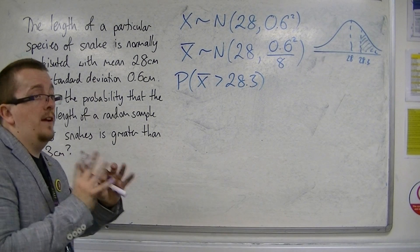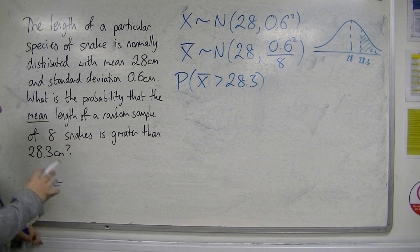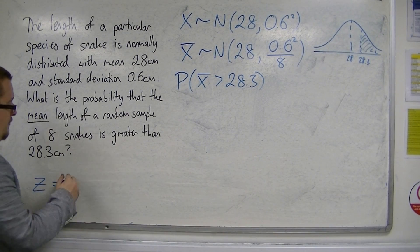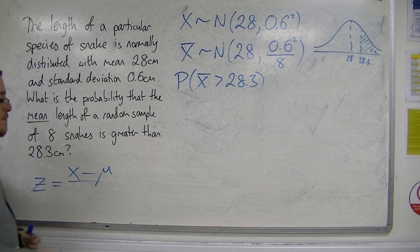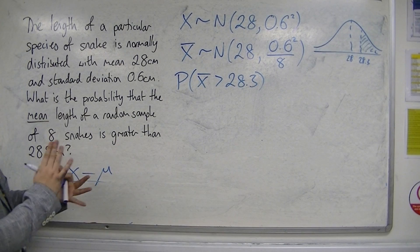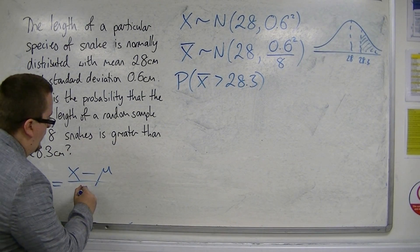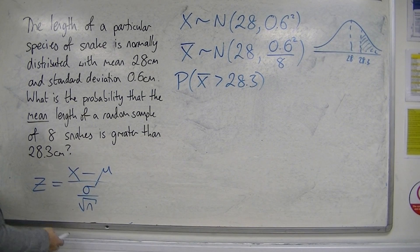So we're going to have to find the z value. Now z, in this case, has a slightly different formula than before. It's still got x minus mu on the top of the fraction, but on the bottom, instead of having the standard deviation, we're now using the standard error, which is sigma over root n. This is the formula we need to use.